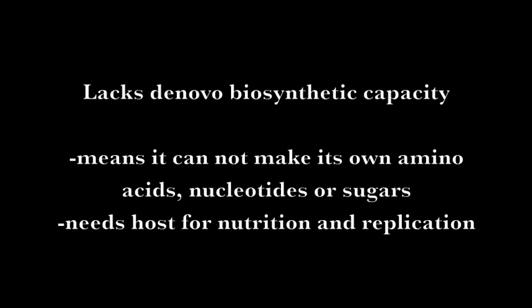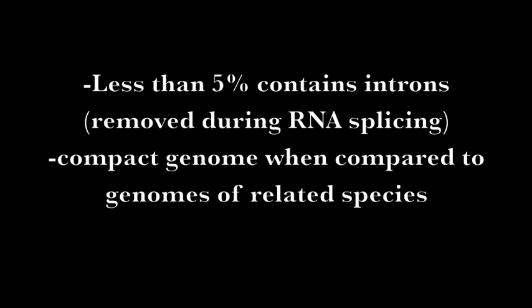With a guanine cytosine content around 30%. The genome lacks all de novo biosynthetic capacities in that it cannot make its own amino acids, nucleotides, or sugars, and thus needs the host for nutrition and replication. The mechanisms by which the parasite uses the host for replication have not been observed or concluded. Less than 5% of the sequence genes in Cryptosporidium parvum contain introns, or non-transcribed sequences of DNA that are removed during RNA splicing. This lack of introns, along with the loss of all de novo biosynthetic pathways, has caused the genome to be compact compared to other related organisms.